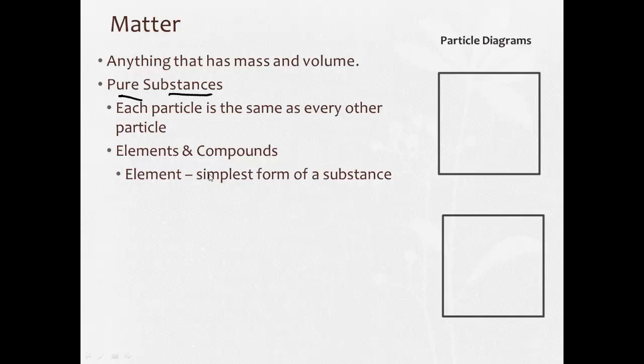The first one, elements, is the simplest form of a substance. Elements are the things that are found on the periodic table, and you're going to spend a lot of time this year learning about that. The basic definition of an element is that it can't be broken down because it is the simplest form of a substance.